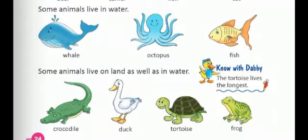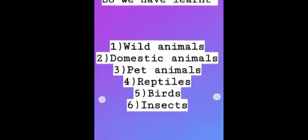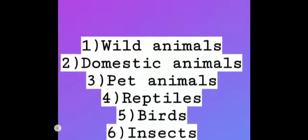Now, a very interesting thing Debbie wants to tell about the tortoise: the tortoise lives the longest — a tortoise can survive for more than 200 years. So children, in this chapter we have learnt about different kinds of animals: wild animals, domestic animals, pet animals, reptiles, birds and insects. Read the chapter twice and thrice, learn all the hard spellings, be happy and safe at home. Thank you, children.